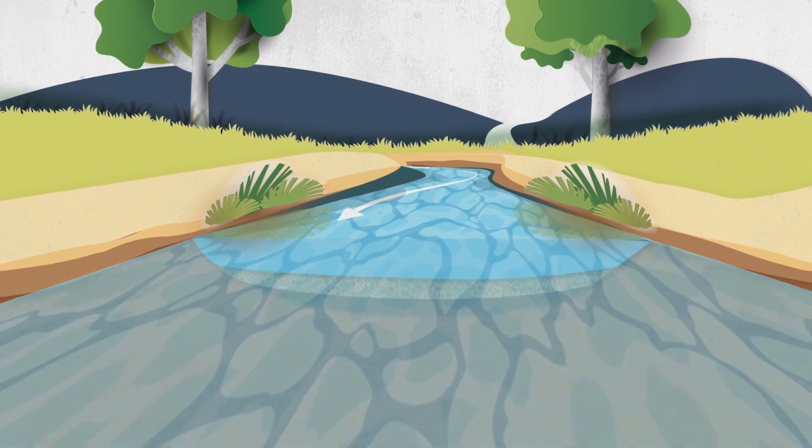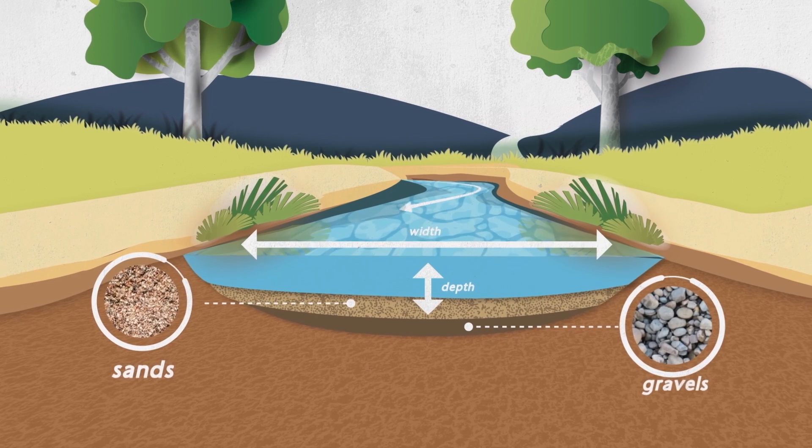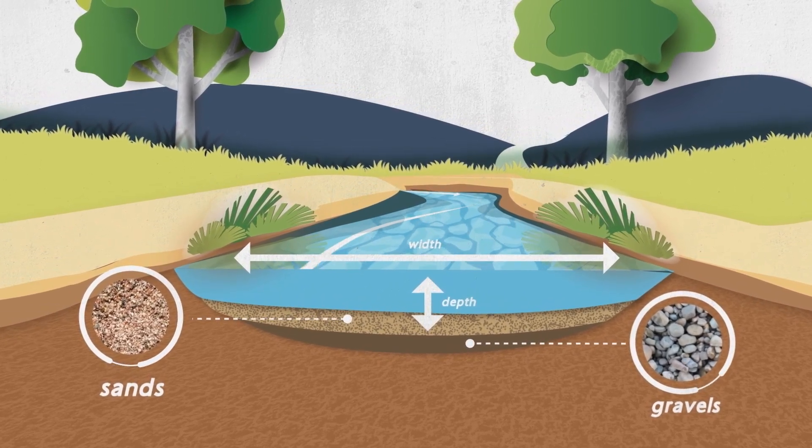Alluvial streams are able to adjust their shape, width, depth, slope and form through erosion and deposition over relatively short time periods.